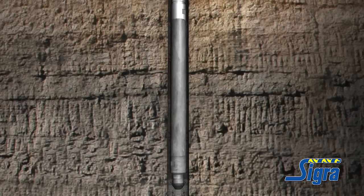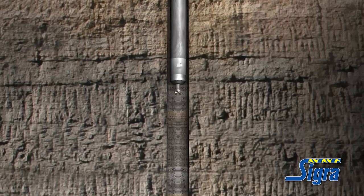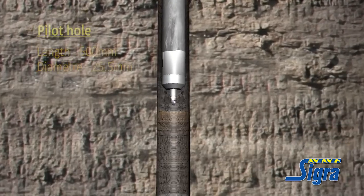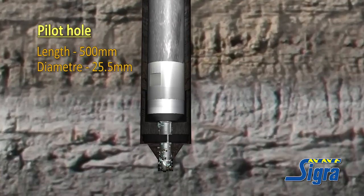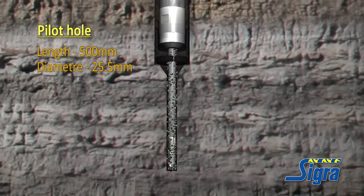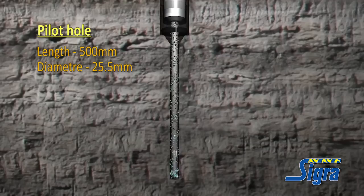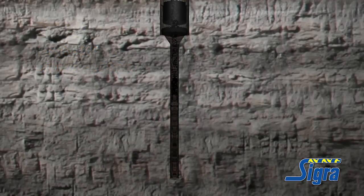The countersink tool is retrieved on a wire line and replaced by a pilot hole drill. This is used to drill a 500 millimetre long by 25.5 millimetre diameter pilot hole. Once this has been drilled and flushed, the pilot hole drill is removed by wire line.